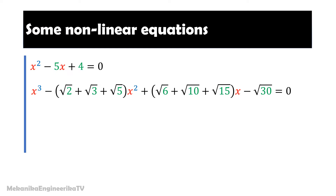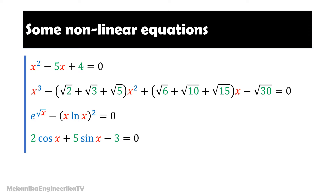The third equation to be solved writes: exponential of the square root of x, minus x times (logarithm of x) all squared, is equal to 0. For this equation, it is more laborious to obtain analytical solutions. The fourth and last equation involves trigonometric functions. It writes: 2 times cosine of x plus 5 times sine of x minus 3 equals 0. Here it is possible to find the theoretical solutions, but deriving solutions needs a few steps using some trigonometric rules.